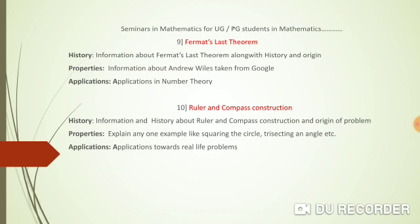The next topic is ruler and compass construction. You use a ruler with only a one-unit marking and a compass. Using only these, can you square the circle (constructing a square with equal area to a circle), or trisect an angle? There are lots of applications. In depth, this is an application of field theory in algebra, so postgraduate students can take up this topic.